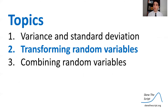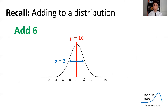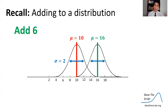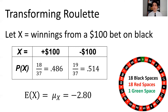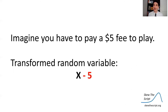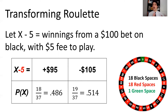Now let's talk about transforming random variables. When we transform data by adding a constant — say adding 6 to every value — the mean shifts but the standard deviation stays the same. Similarly with random variables: say every time you play roulette, you pay a $5 fee. So we define a new random variable X minus 5. The new outcomes become winning $95 (you made $100 but paid $5) or losing $105 (lost $100 plus $5 fee).